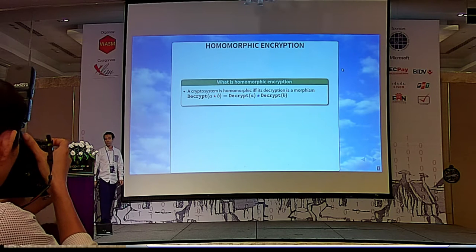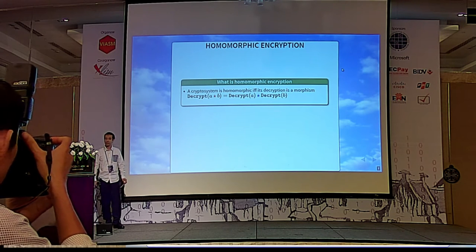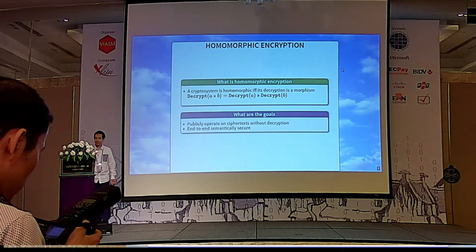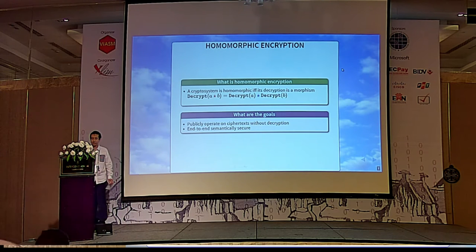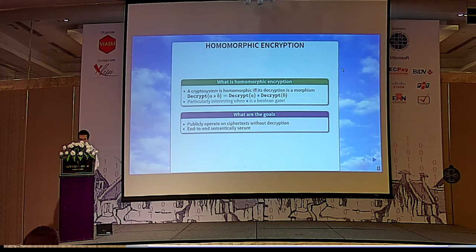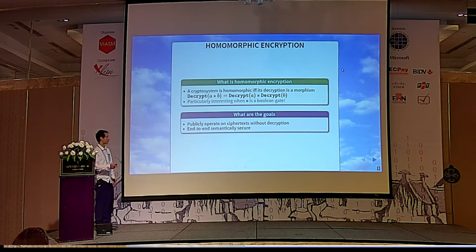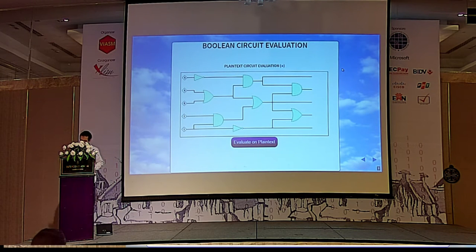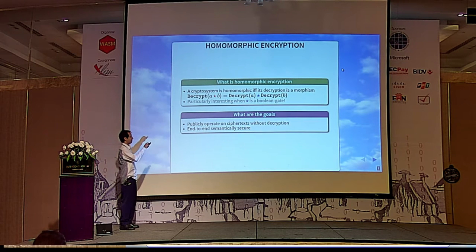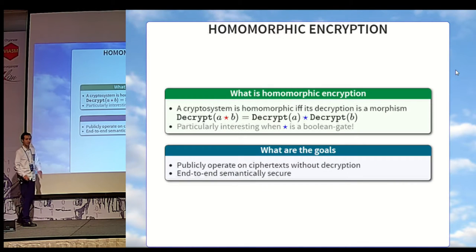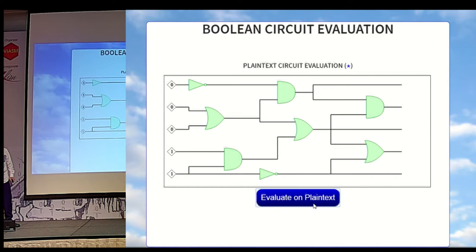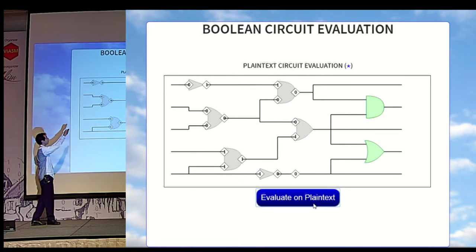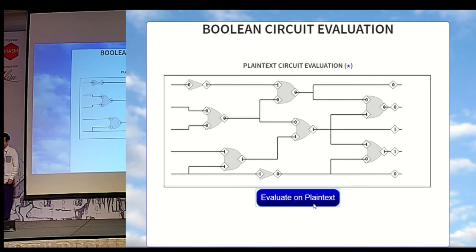What is homomorphic encryption? The straightforward definition is that it's a cryptosystem whose decryption is a morphism. The goals are to publicly operate on ciphertext without decrypting them and being end-to-end semantically secure. You may view this as a group morphism but, of course, the less structure there is, the more fun it is. In this definition you can see that there is a red star operation that you can apply between ciphertext that will have the same effect on the plaintext as the blue star operation. This is the kind of blue star operation we are particularly interested in. The evaluation of boolean gates.